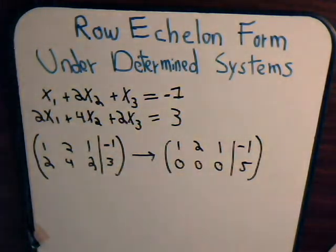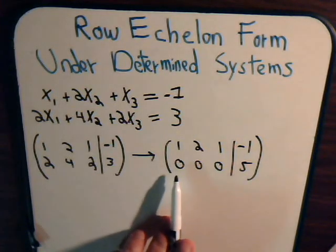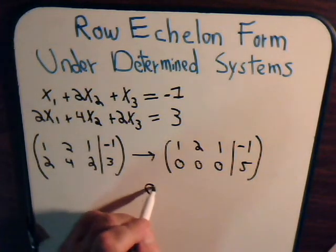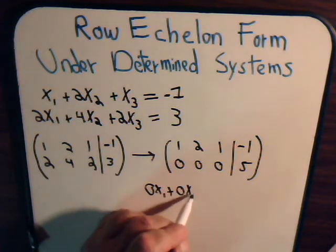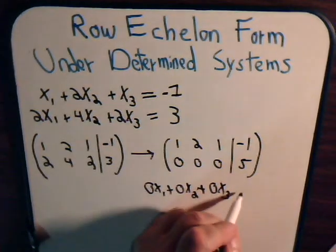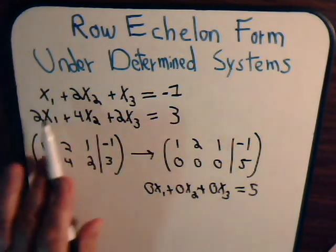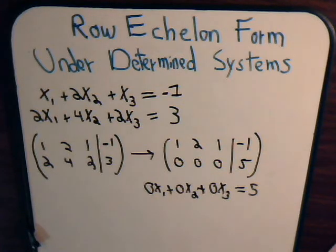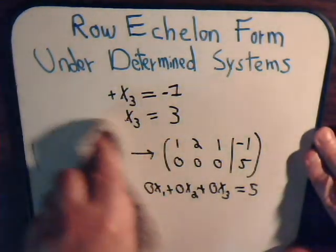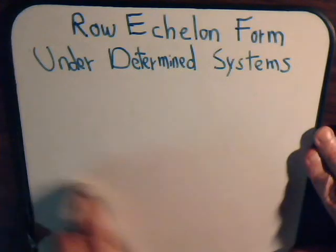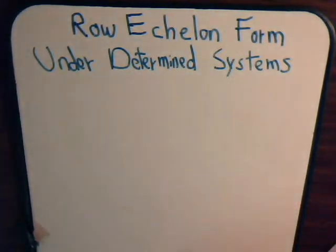Going no further, we have something nonsensical. From this row: 0·x1 + 0·x2 + 0·x3 = 5, which means 0 = 5. That can't happen, so this system is underdetermined and has no solution. But as we saw with overdetermined systems, there can be situations where solutions do exist, and the same applies to underdetermined systems — only in a more interesting context.